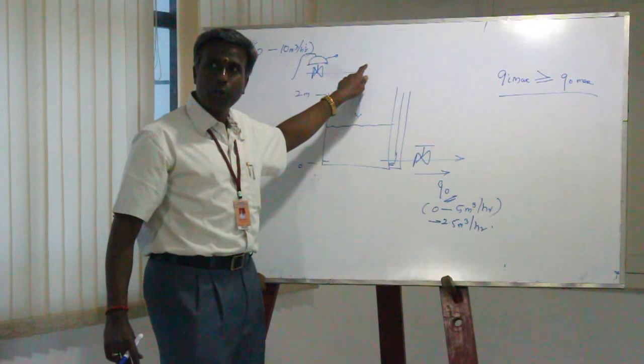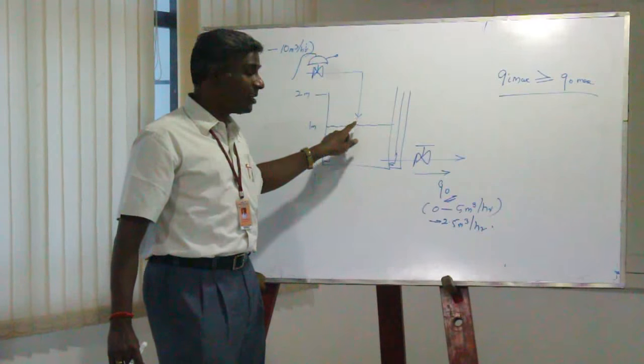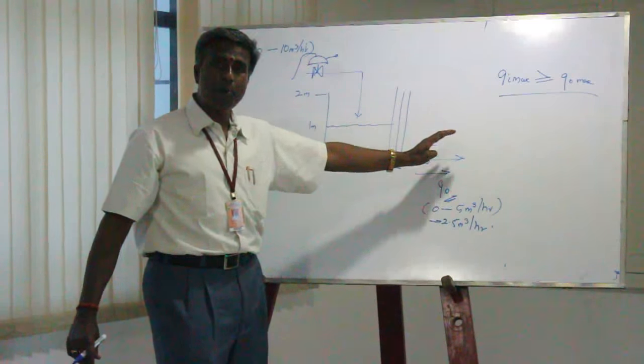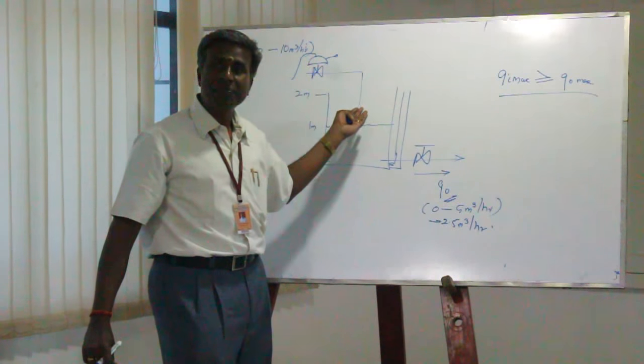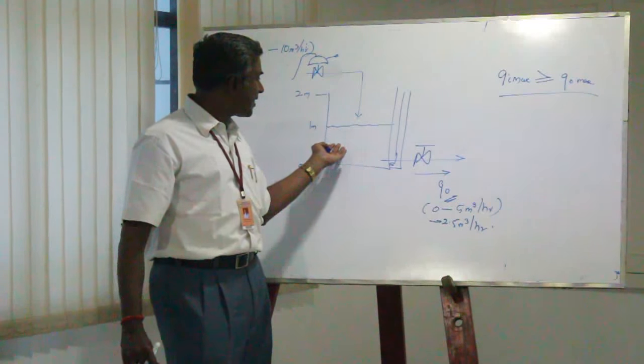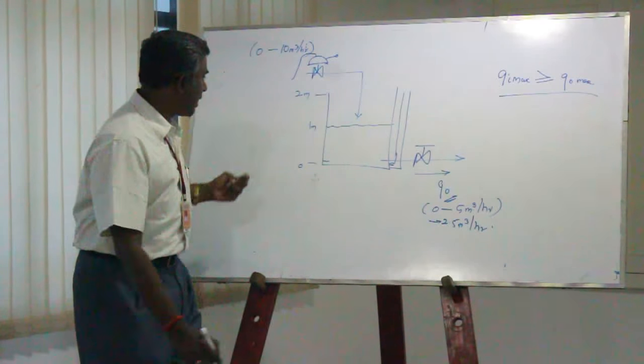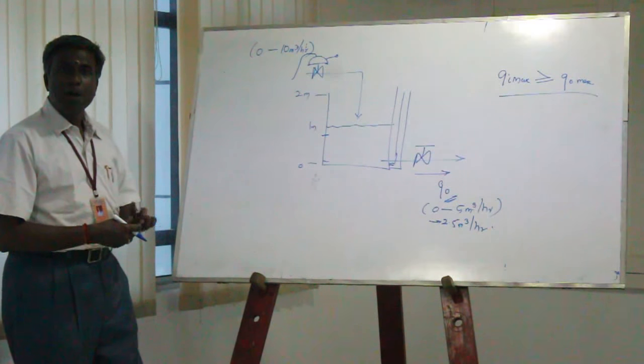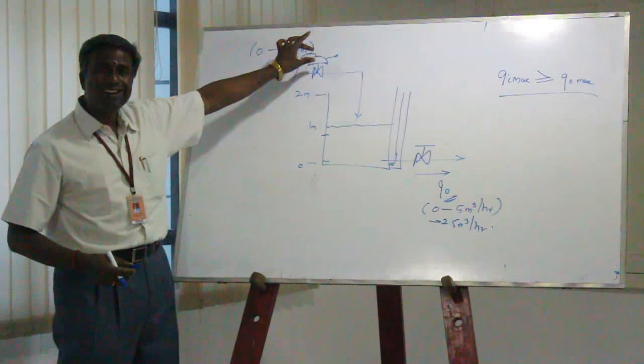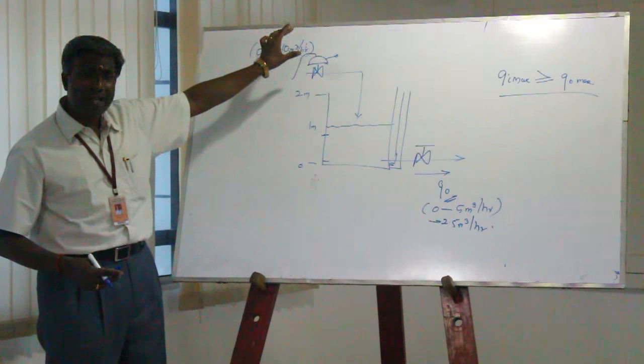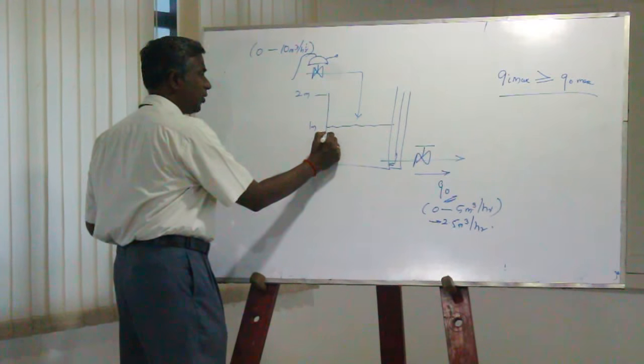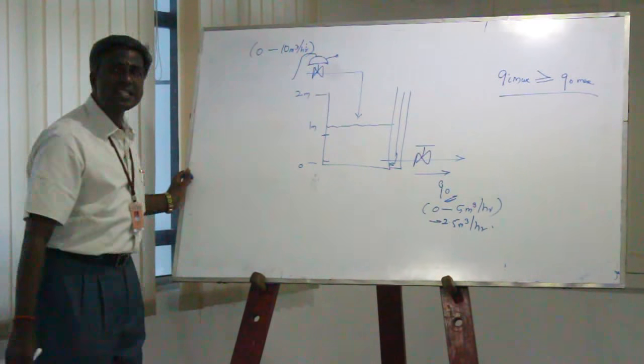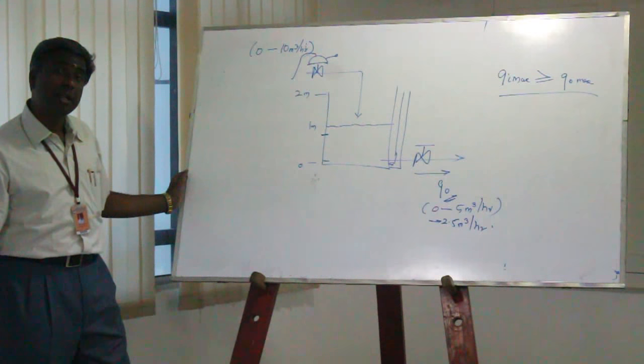When this is going to be 10 cubic meters per hour, obviously against an output of 2.5 cubic meters, the level will begin to increase. As the level is getting increased, when I am around this area of 0.8 or 0.9, probably I think of regulating this flow. When I try to regulate this, this particular value of level can go above that and then it can get settled.